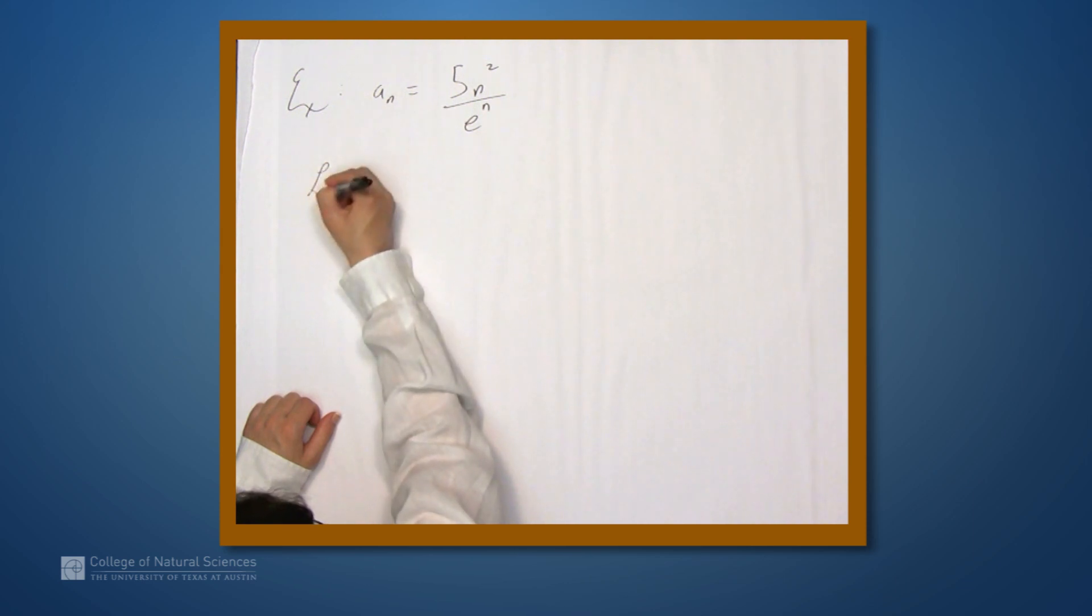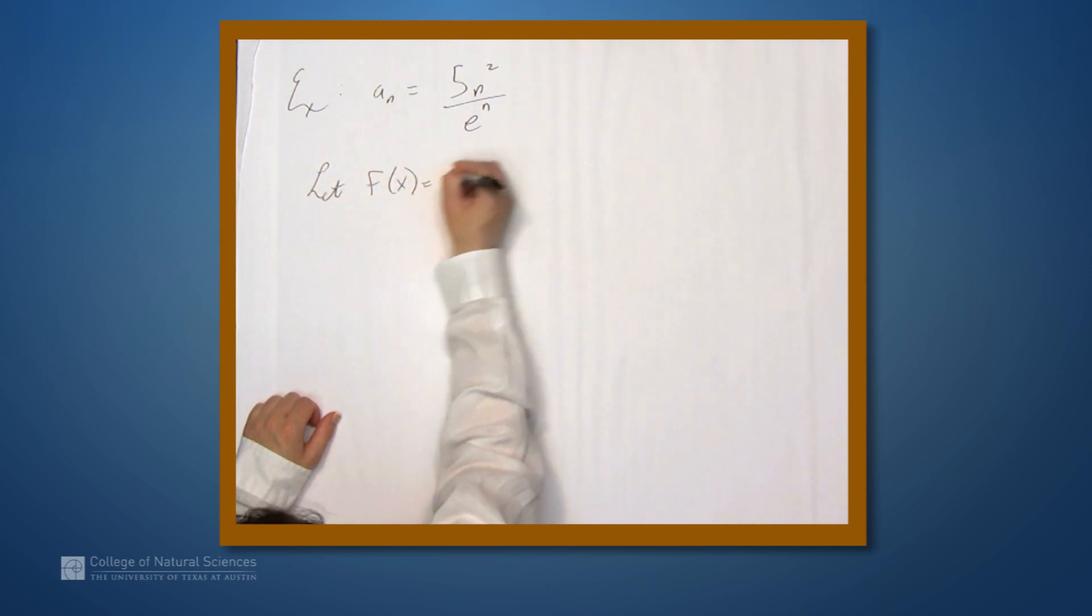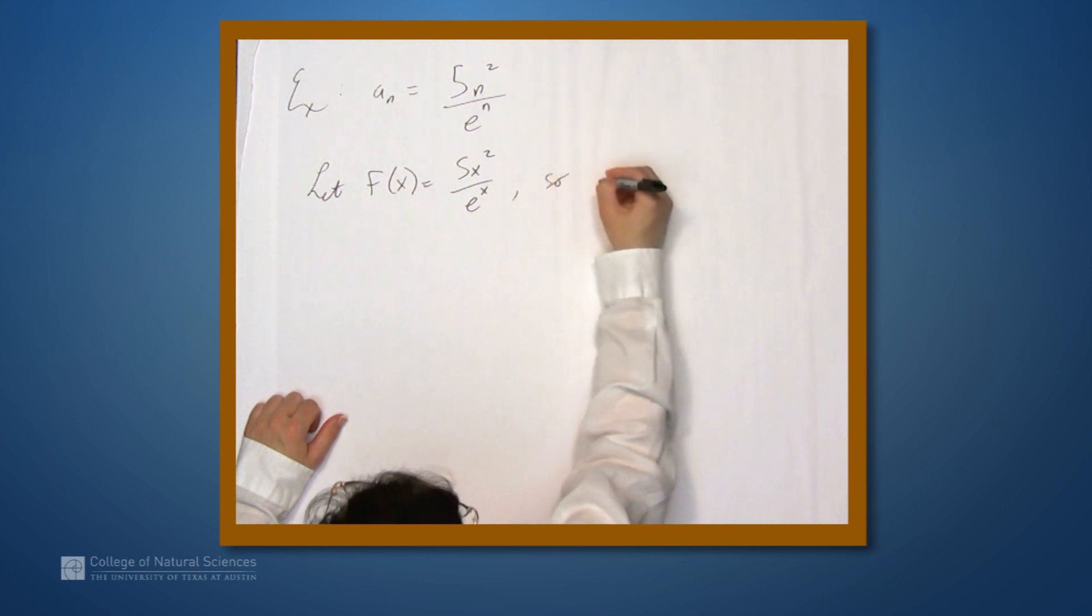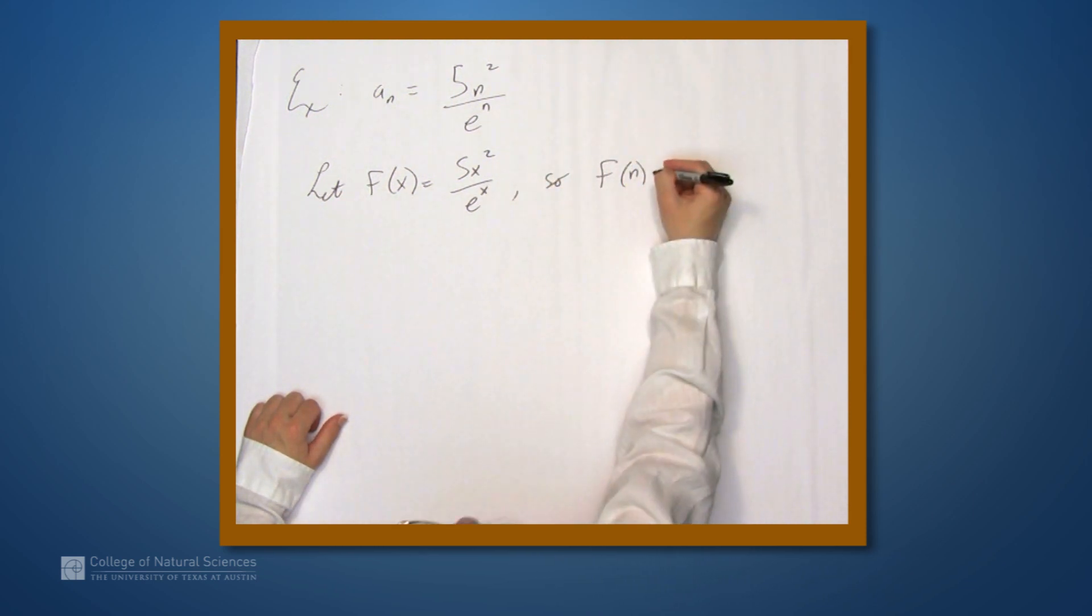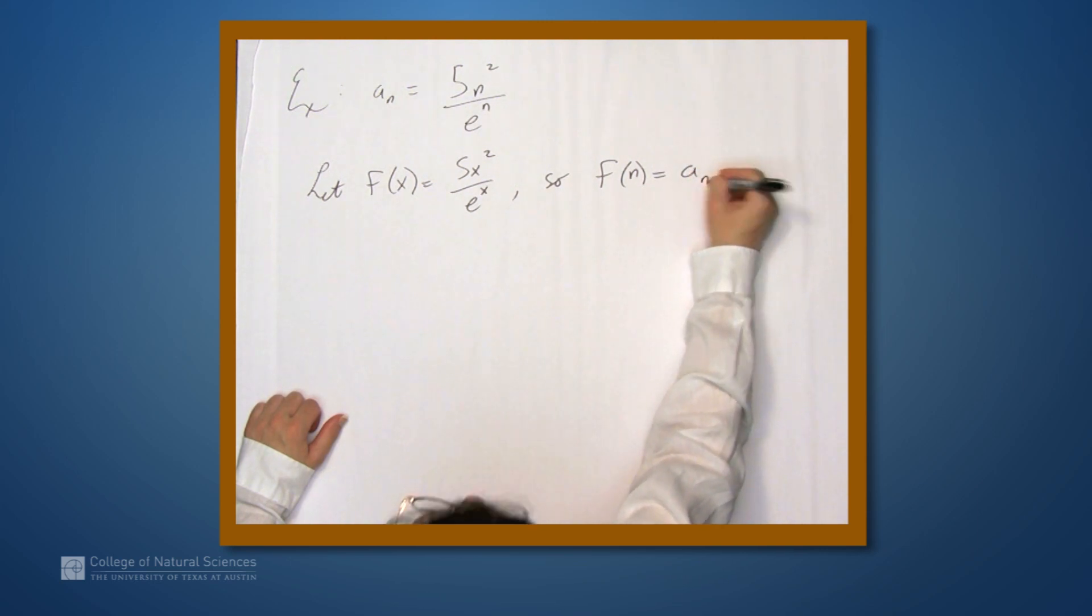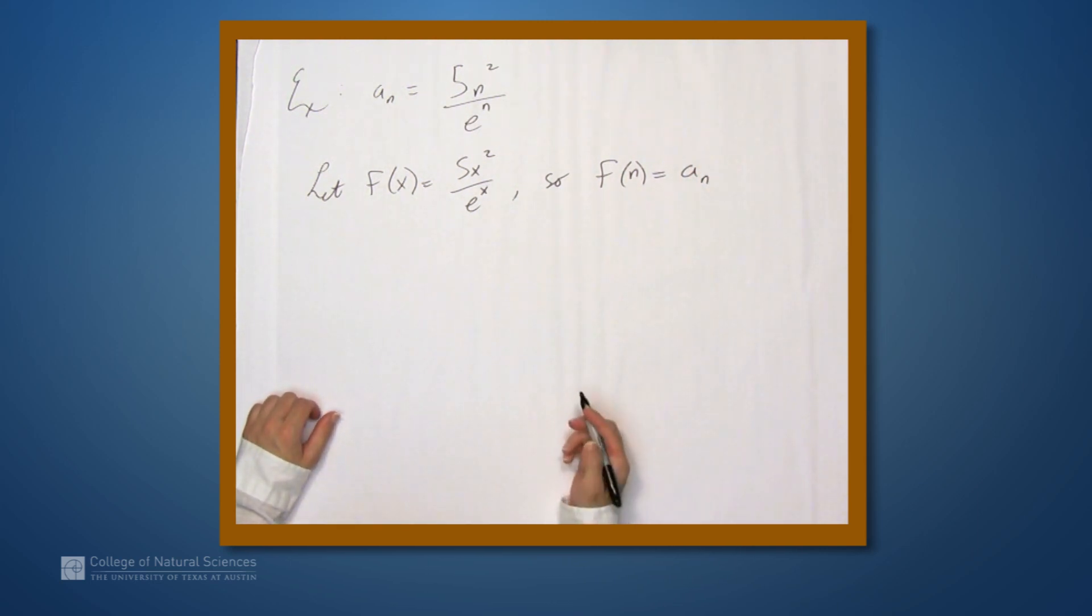So let's let f be 5x squared over e to the x. So f is a sub n. So we're defining a function.